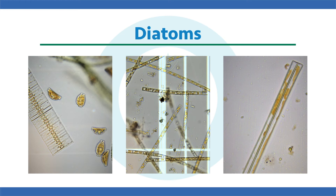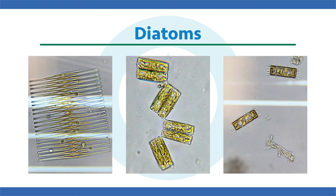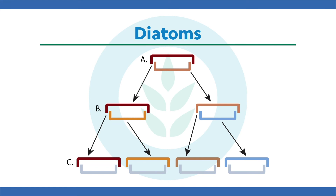The next group is the diatoms, or Bacillariophyta. These are very common algae with a silica frustule — a silicon dioxide outer wall — and they can reproduce both asexually and sexually. In asexual reproduction they go through mitotic division: the cell wall splits, the epitheca (the top of the diatom) comes off and grows a new hypotheca, and the other half also grows a new hypotheca. Both halves grow a new smaller hypotheca, so diatoms keep getting smaller and smaller through time.